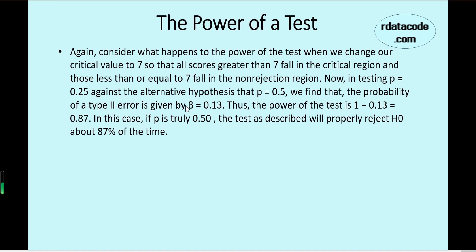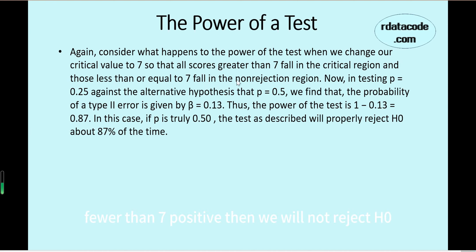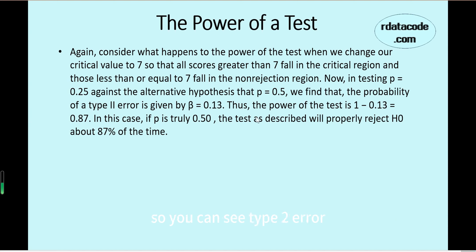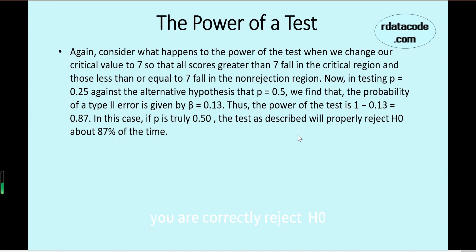If we change the critical region to more than 7 positives in a sample of 20, then we reject H0; otherwise fewer than 7 positives and we do not reject H0. Recalculating with this binomial probability, beta is now 0.13, so Type 2 error is lower than before. The power of the test is now 0.87 — higher than before. About 87% of the time we correctly reject H0, and 13% of the time we fail to reject H0 when H0 is actually false.